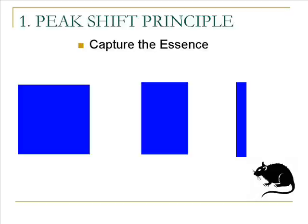The first principle to consider is called the Peak Shift Effect, which is typically known in animal discrimination learning. For instance, let's say a rat is taught to discriminate the difference between a square and a rectangle. Every time it finds a rectangle, it gets a reward. Soon, the rat will learn to respond more frequently to the rectangle than the square. Eventually, the rat will respond even more to a rectangle that is skinnier and longer. This curious result implies that the rat is learning not a prototype, but a rule.